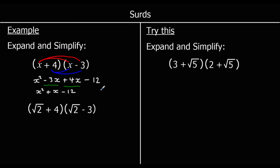When we've got surds inside the brackets, we follow the exact same process. Here we've got root 2 plus 4 times root 2 minus 3. So we multiply root 2 by both the terms in the second bracket, and 4 by both the terms in the second bracket as well. We do root 2 times root 2 first — root 2 squared is just 2. Whenever you've got a surd multiplied by itself: root 2 times root 2 is just 2, root 3 times root 3 is just 3, root 5 times root 5 is just 5. So root 2 times root 2 is 2.